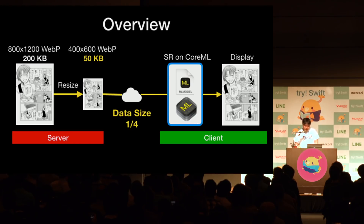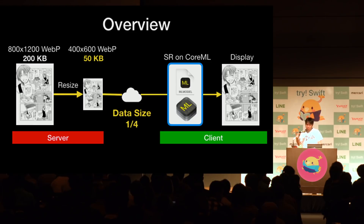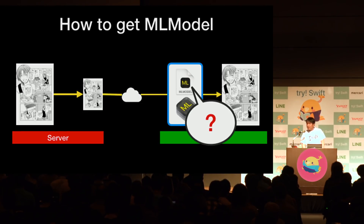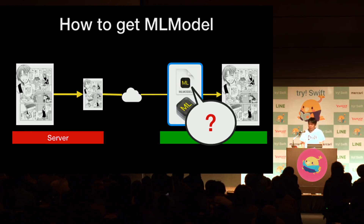The most important thing is that this conversion process runs on your device completely. You don't need a network connection. Core ML is a machine learning framework on iOS. You have to deploy an ML model — but how do you get an ML model?